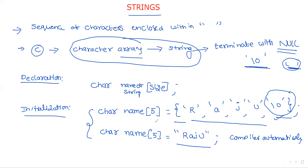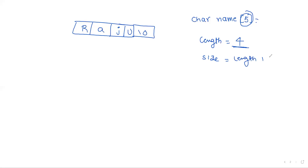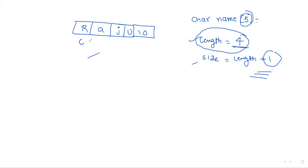This is the sequence of memory locations: R, a, j, u, and then terminated with the null character. The size of this string is declared as char name[5], so five elements are stored. Note the difference: the length of the string is four — the original characters we passed. The size is always length plus one, because size includes the original characters along with the null character. The elements are stored at indices 0, 1, 2, 3, and 4.